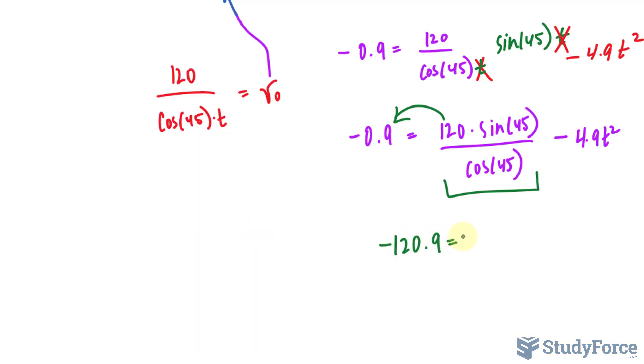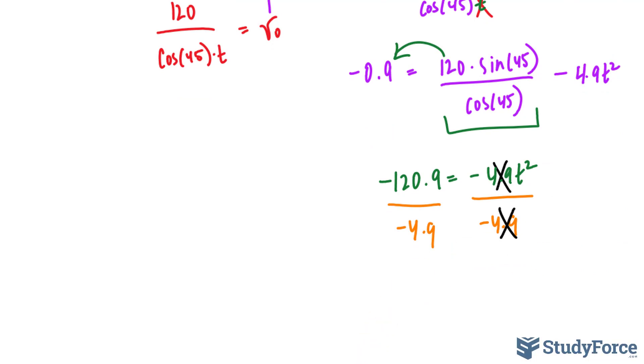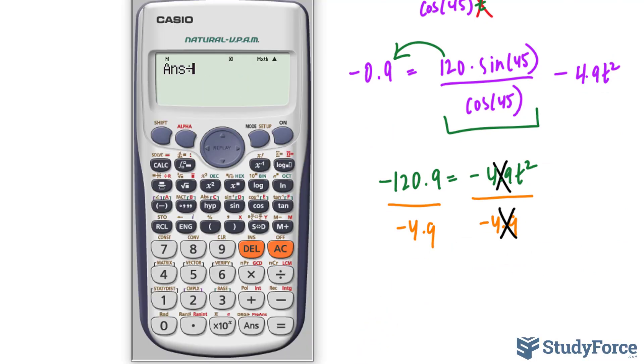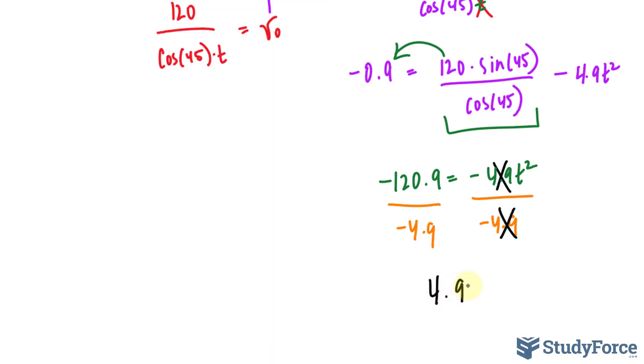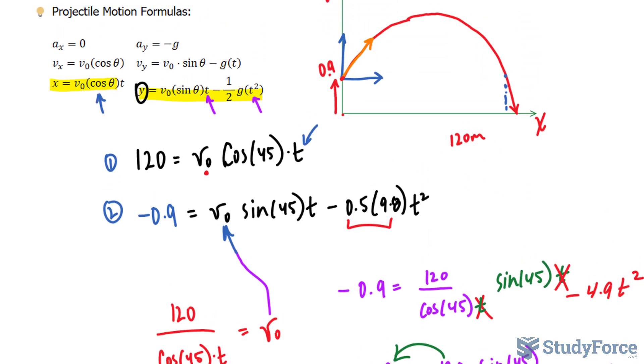Let's write that down. Negative 120.9 is equal to negative 4.9t squared. We divide both sides by negative 4.9. You see? This cancels out. Then we will be left with t squared on the right side. First, the left side. This number divided by negative 4.9 makes a positive number. That, square rooting this, we get 4.967. Remember, there are two values for t, one being positive and negative, and we'll only take the positive version. So, we'll take this. That's the amount of time that it takes to reach 120 meters.